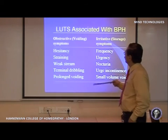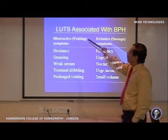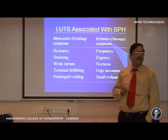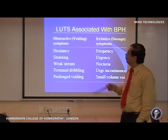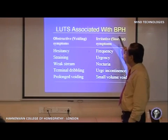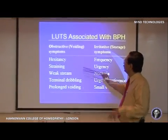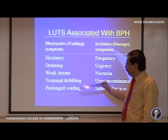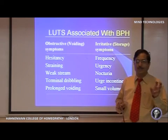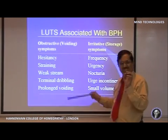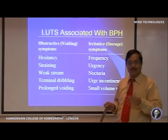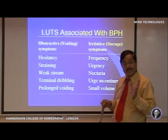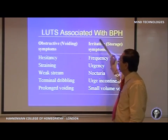We call it nowadays lower urinary tract symptoms — the internationally accepted terminology is LUTS. Previously we called it prostatism, but now we use LUTS. These are divided into two types: obstructive symptoms include hesitancy of flow, straining, weak stream, terminal dribbling, and prolonged voiding time — the patient takes a long time to empty the bladder, the stream is very thin, and there is hesitancy. There are also storage or irritative symptoms.